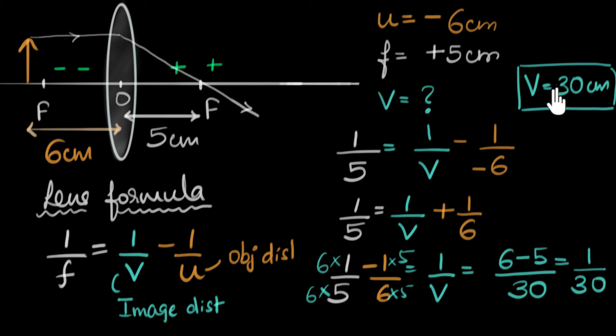Well, for that, we look at the sign of the image. If the image distance was negative, if this was negative 30, then it means that the image is on the left side of the lens. But since we are getting it as positive 30, that means the image distance is to the right side of the lens.